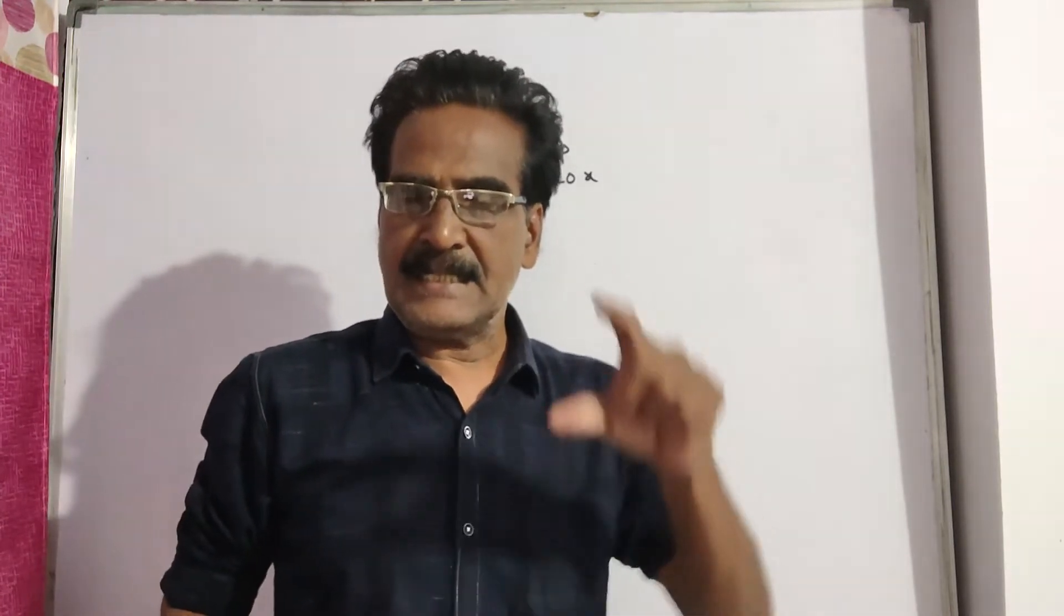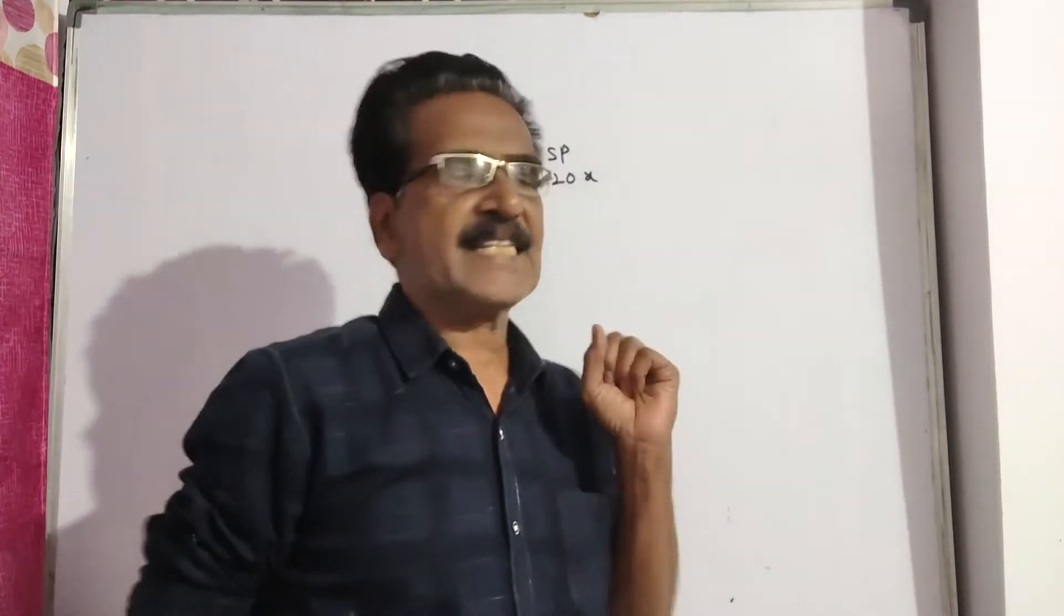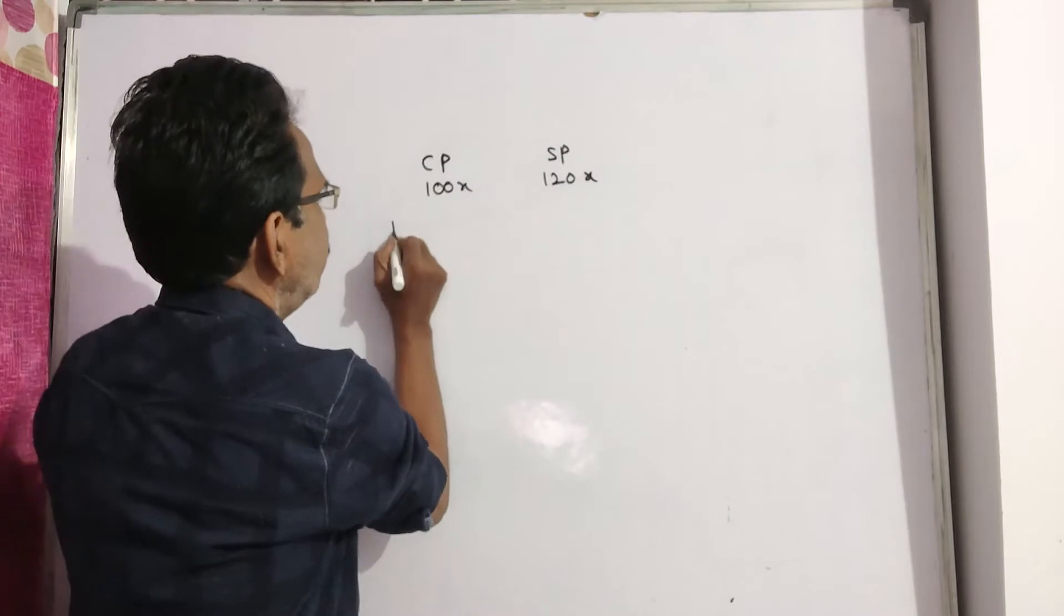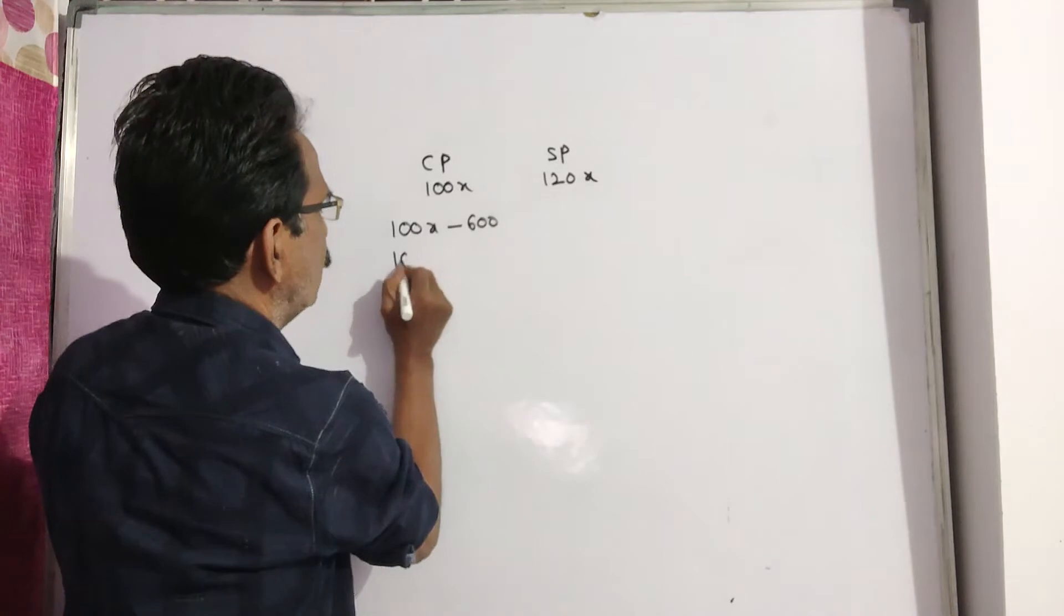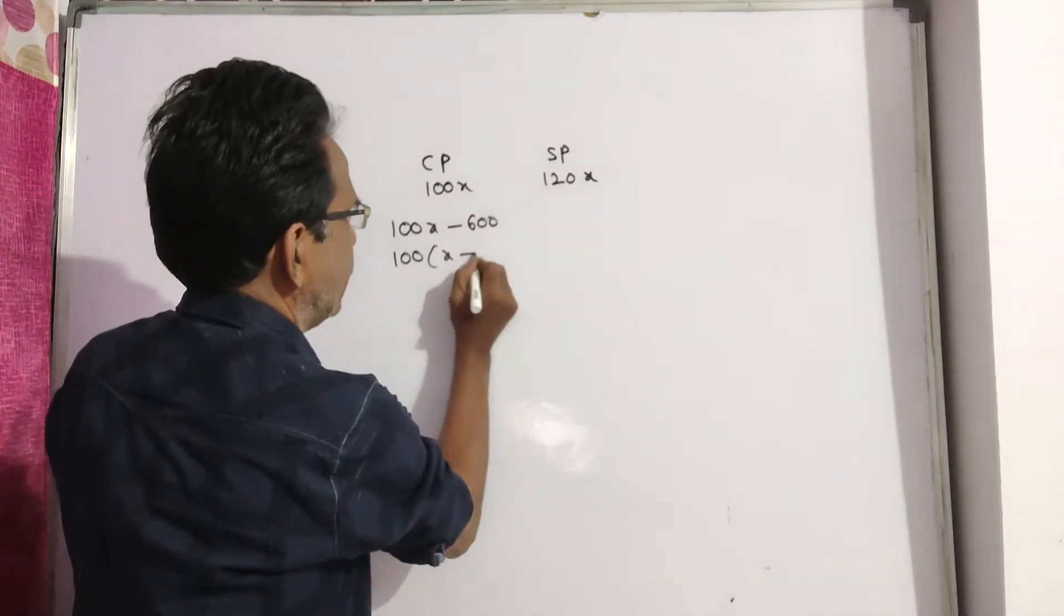If he had bought it at 600 rupees less, that is equal to 100 into x minus 6.